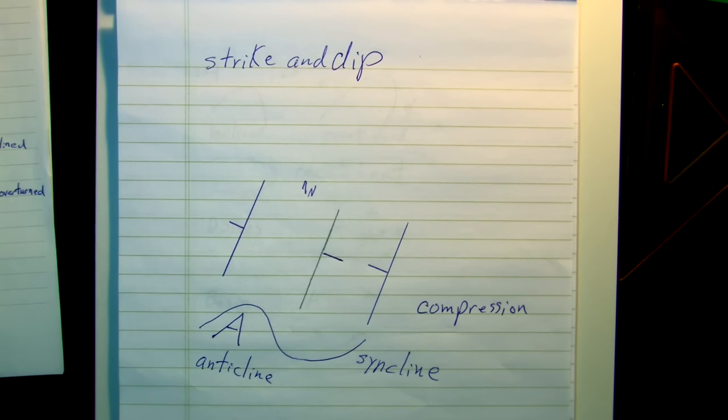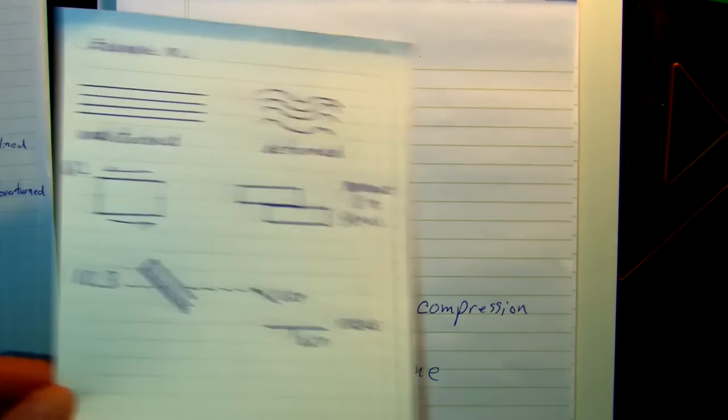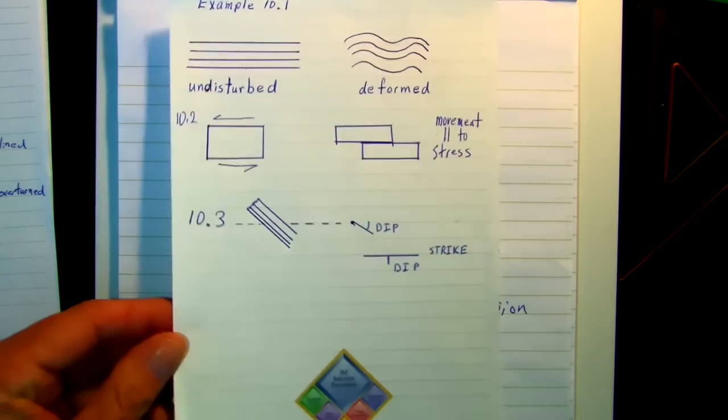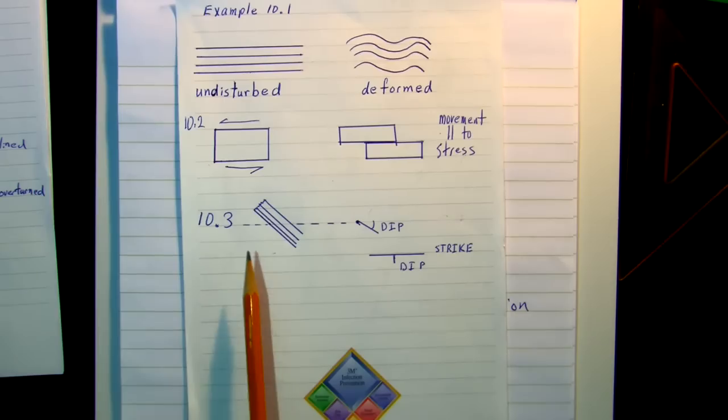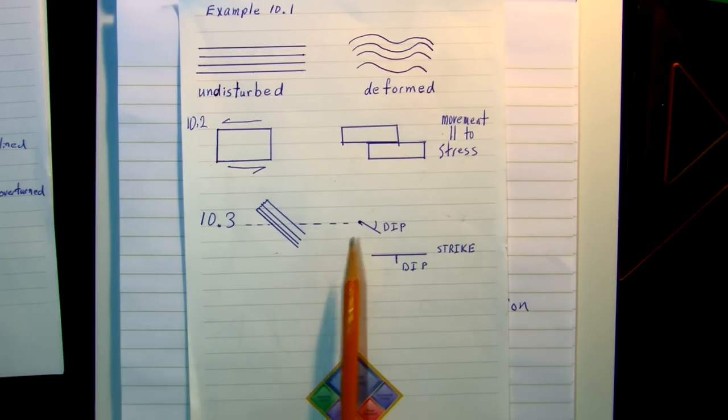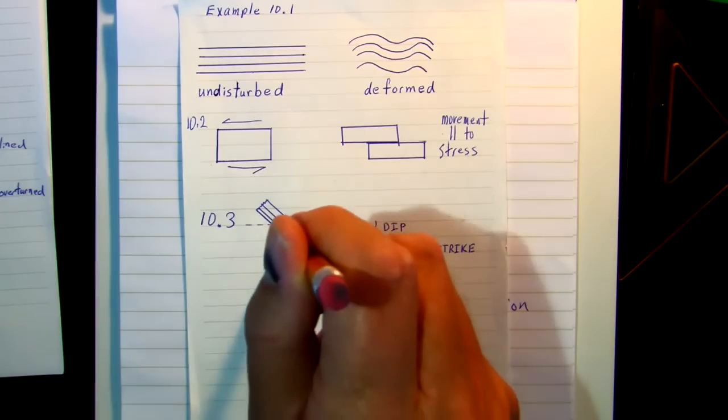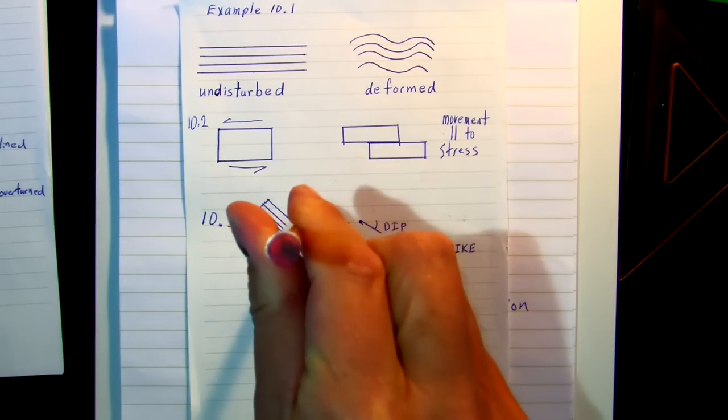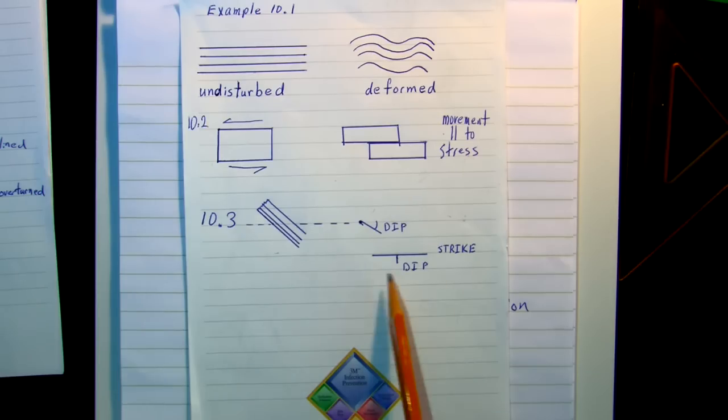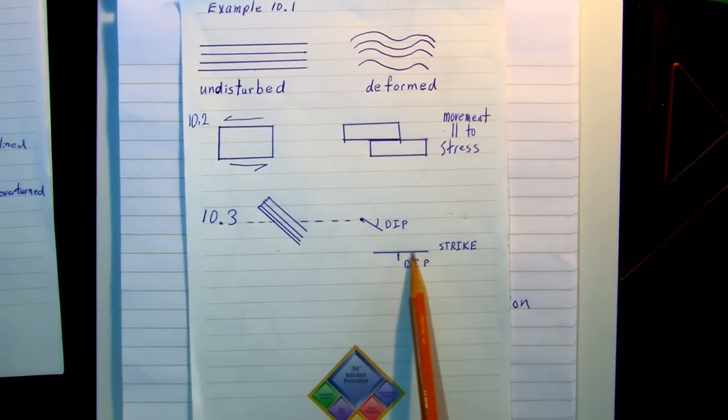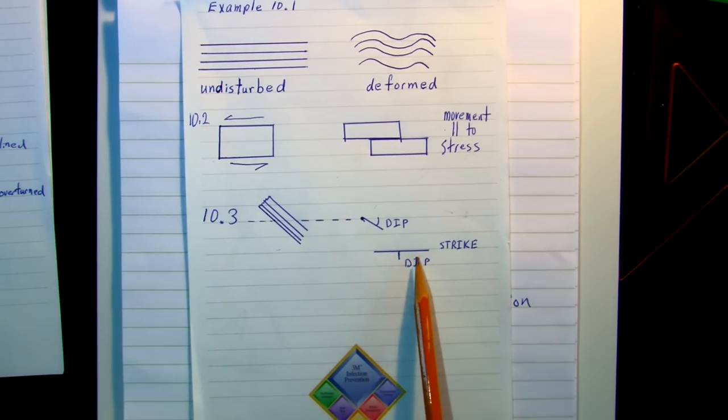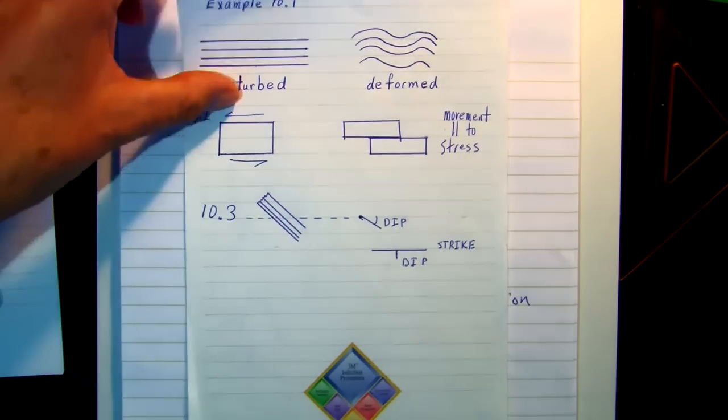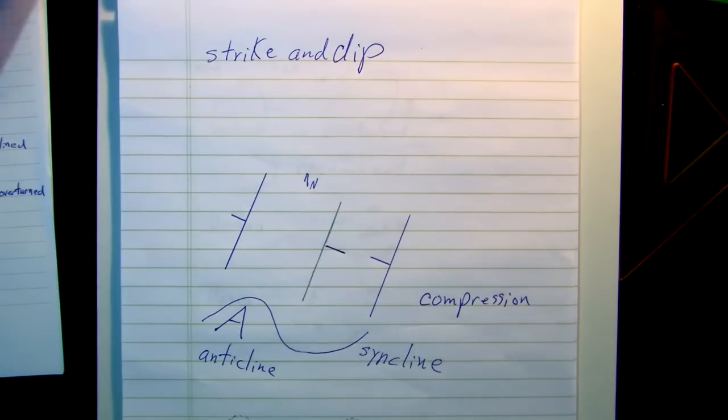Remember from high school, if you had two planes, one plane intersecting another, where these two intersected creates a straight line. In this case, the pencil going into the paper. This line is what we refer to as the strike. At 90 degrees to it, and going downhill, is the dip.